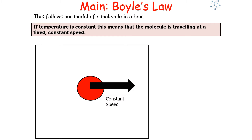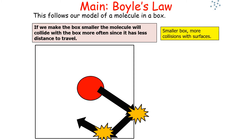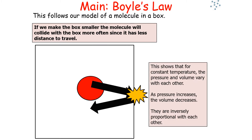This links to our model of a particle in a box: if the temperature is constant, the particle travels at a fixed speed. If we increase the size of the container, the gas particle has fewer collisions with the sides in the same time, because it has to travel further before it collides. The bigger the box, the fewer collisions; the smaller the box, the more collisions, since the particle has less distance to travel at the same speed. So for a constant temperature, as pressure increases, volume decreases, and vice versa — they are inversely proportional to each other.